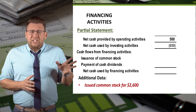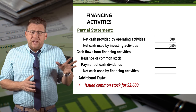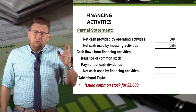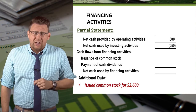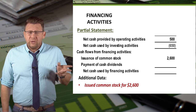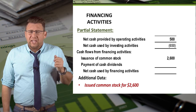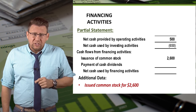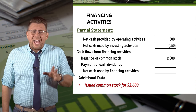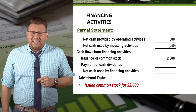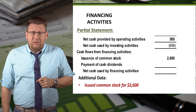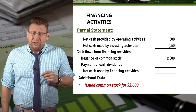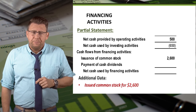The first item identified is some information about the issuance of common stock. The issuance of common stock for $2,600 is added in the financing activities section because cash is being received in exchange for stock.